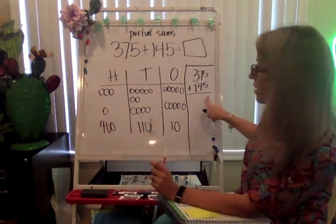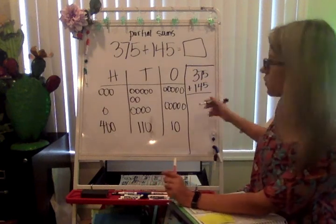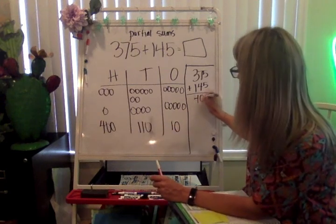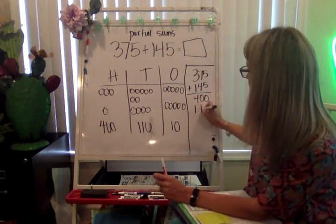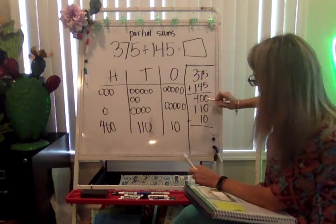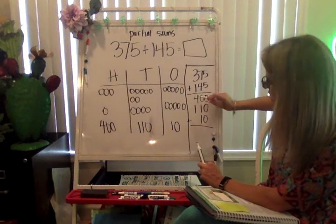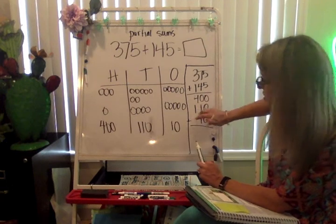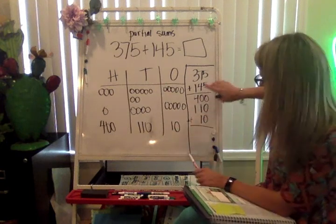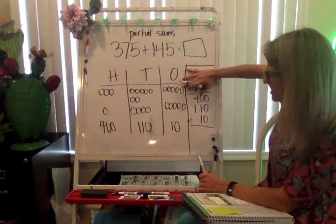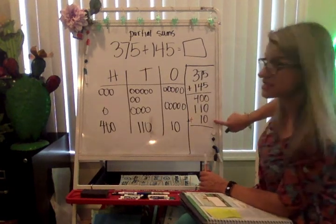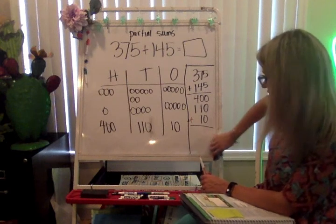These are what I'm going to write as my partial sums underneath my equation. So I'm going to just go in order from greatest to least, and I'm going to say 400 plus 110 plus 10. Notice how we have to keep these lined up. All my 1s are lined up. All my 10s are lined up. And my 4 and my 1 in the 100s place, they are also lined up.